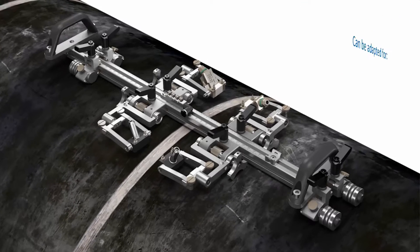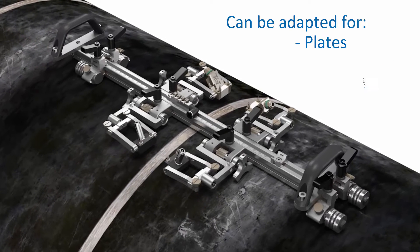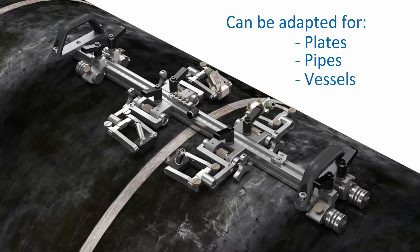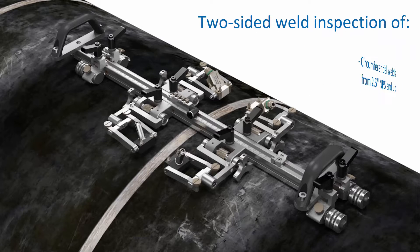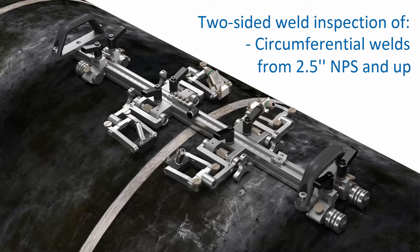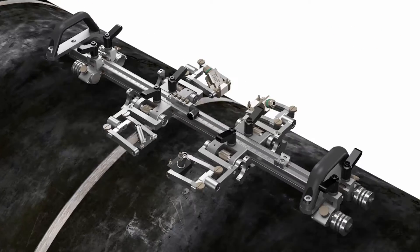ZETEC Weld Crawler is an encoded, manually driven scanning mechanism that can be adapted for different inspection configurations on plates, pipes, or vessels, as well as different weld orientations. The basic scanner kit allows for two-sided inspection of circumferential welds from 2.5 inches nominal pipe size and up, and for wall thicknesses up to 2 inches.